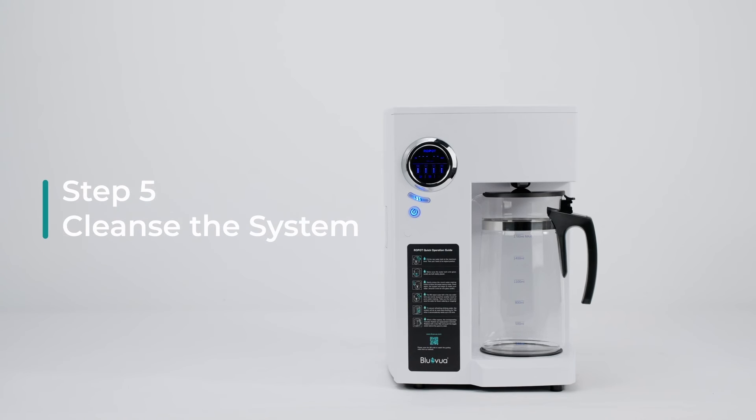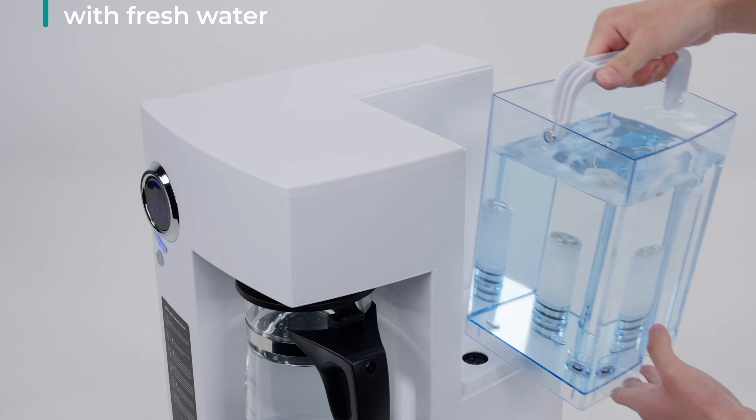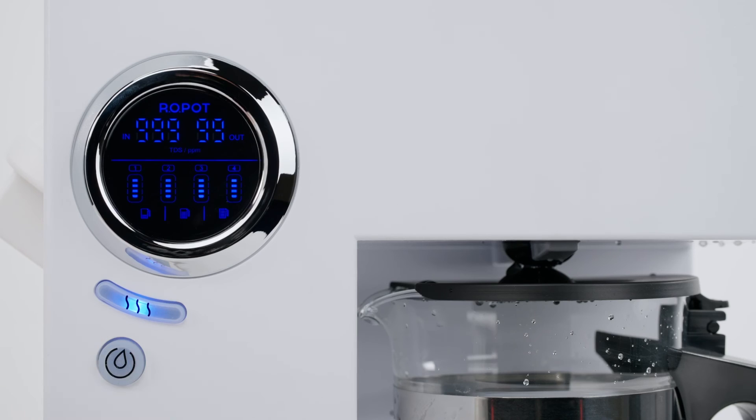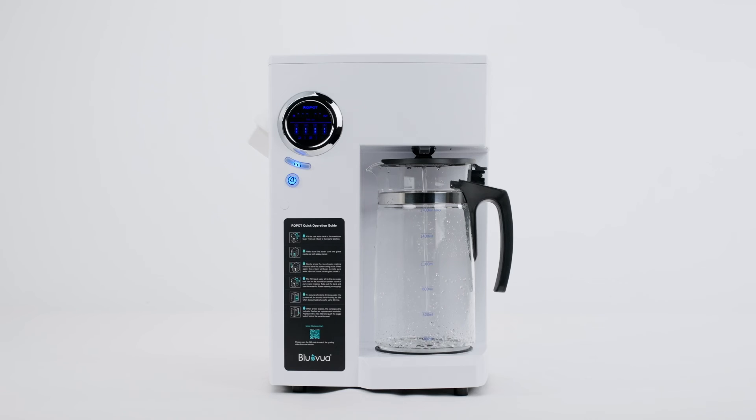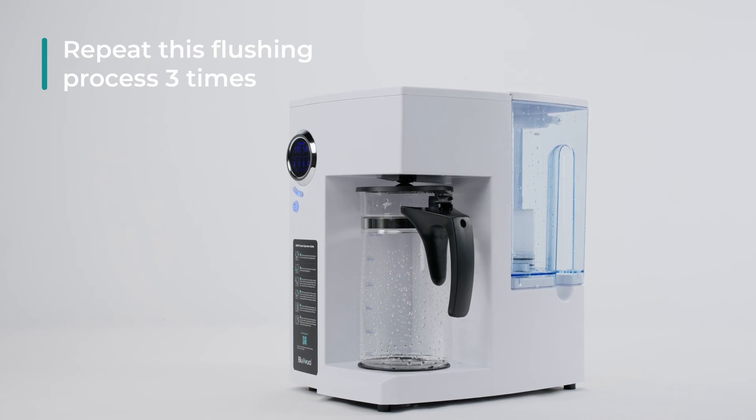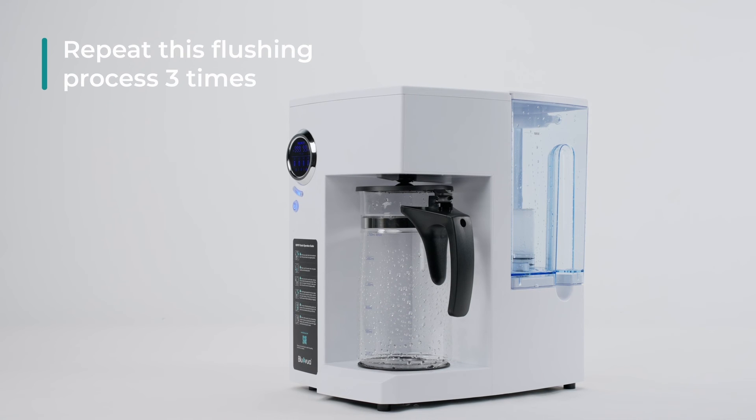Step five: Cleanse the system. Refill the tank with fresh water to the max line. Run the system to flush out the descaling solution. Discard the water from the carafe and tank. Repeat this flushing process three times to ensure thorough cleansing.